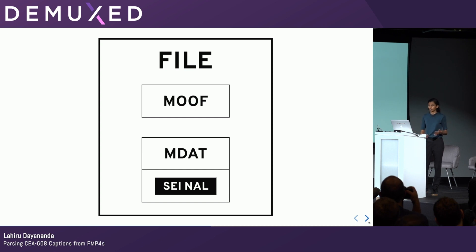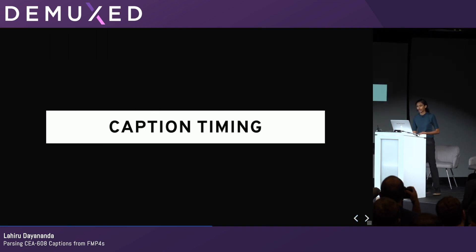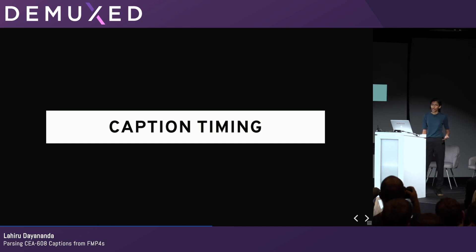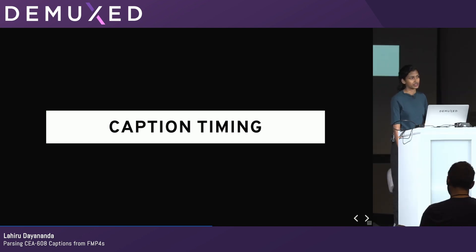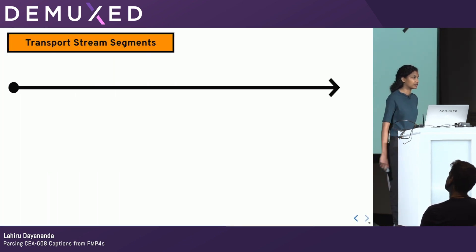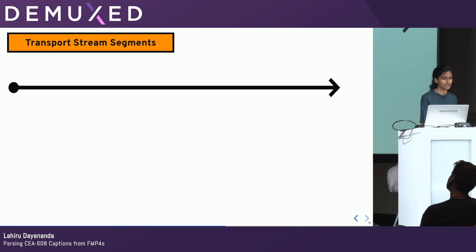Now we have a caption in an FMP4 segment, but we still don't have the caption timing for it. When I first started looking into this for VideoJS, we already had code to parse 608 captions out of SEI NALs, but it was coded very specifically for the timing in transport stream segments, which doesn't translate well over to FMP4s. So let's take a short detour into time and transport stream segments.